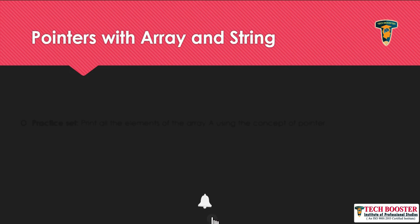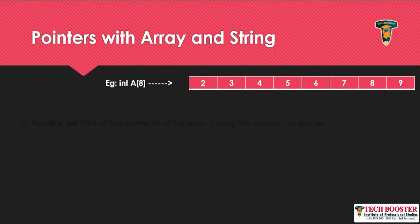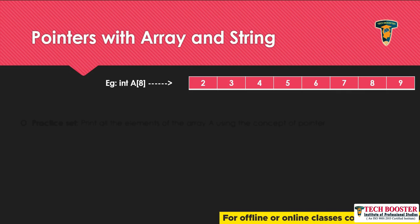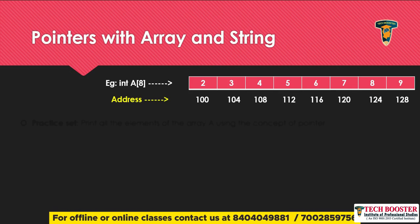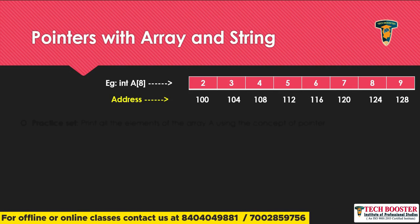To understand how your pointer will work with array, I've considered an array here. My array is 'a', which is of type int, and this array is holding eight elements: two, three, four, five, six, seven, eight, and nine. Whenever we want to work with our pointer we need to work with the address of those elements. I've considered the address of my first element to be 100, and since int is four bytes, my second address will be 104.